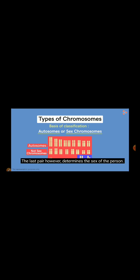The last pair, however, determines the sex of the person. So, if the two are identical, that is, both are X and X, then the individual is a female. And what if both are different? In such a case, when one chromosome is X and the other is Y, the individual is a male. This pair is the sex chromosomes.